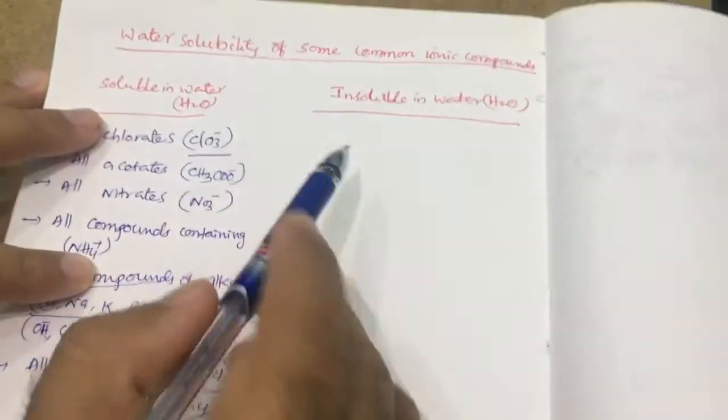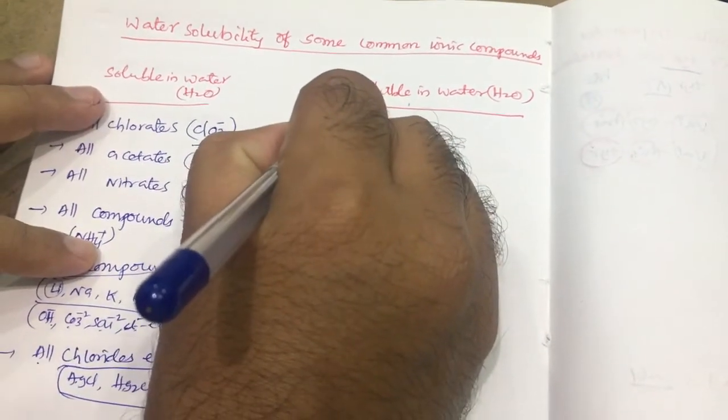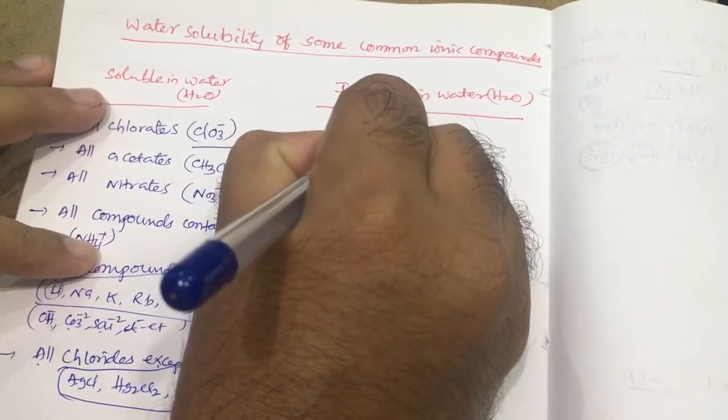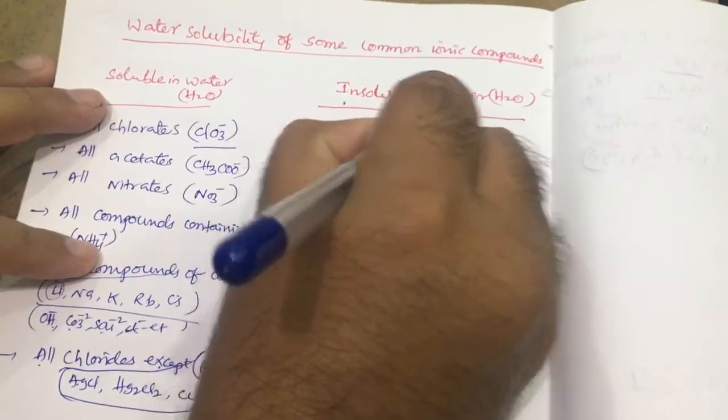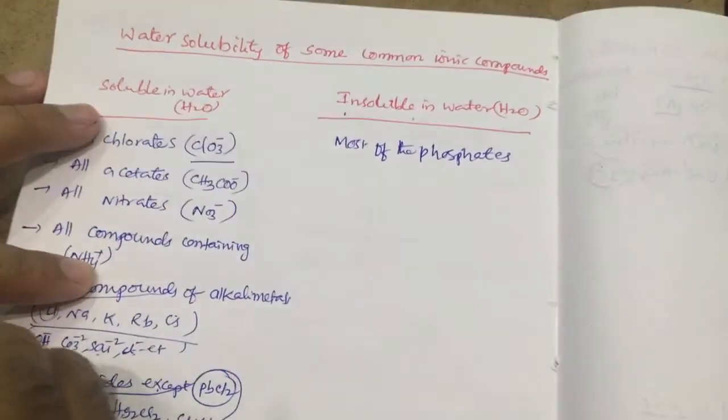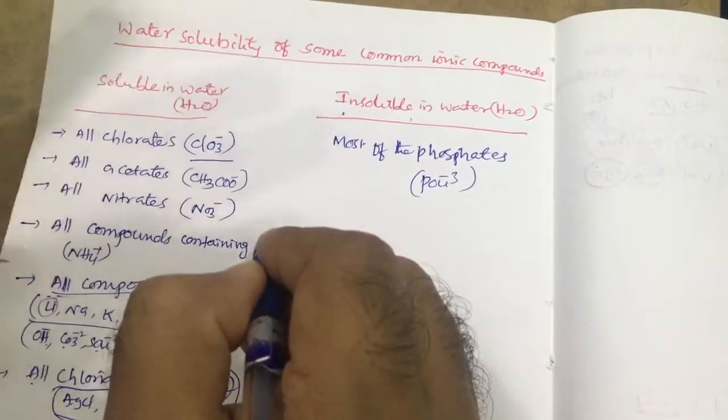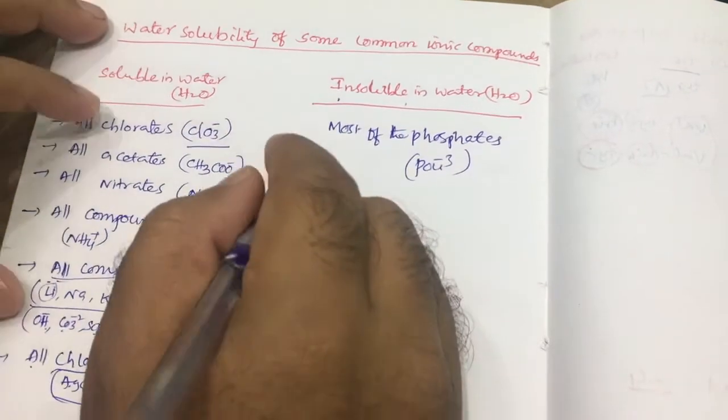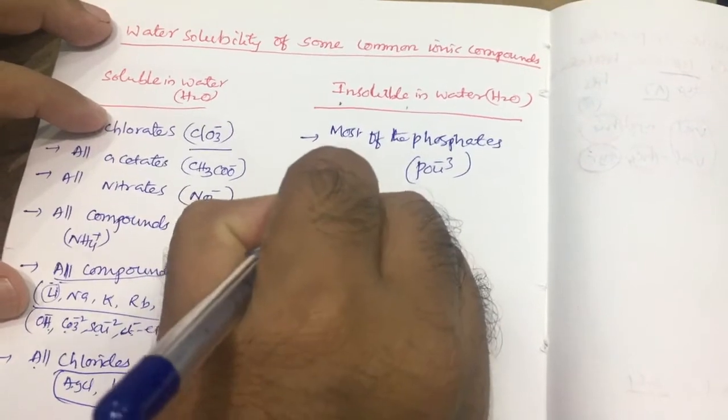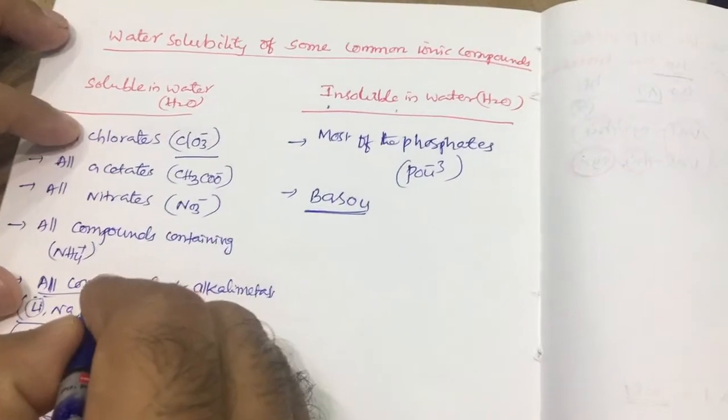These are the soluble. Next, insoluble in water. What are the insoluble generally? For example, most of the phosphates are generally insoluble. Phosphate form ion is PO4^3-. Along with this, any positive charges, that is insoluble in water. Next, barium sulfate, generally this is also insoluble in water.